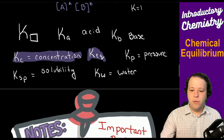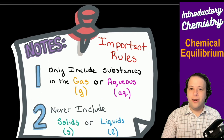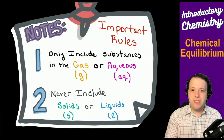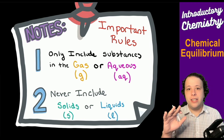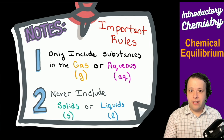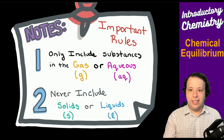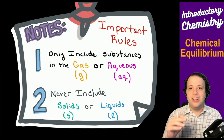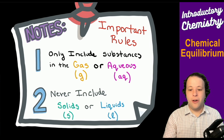What do we know about these K values? There are some important rules. We can't just write the formula products over reactants with everything included. You can only include gases and aqueous phases of chemicals — you never include solids and liquids when going through this expression. It's only gases and aqueous mediums.